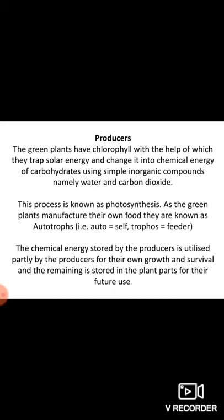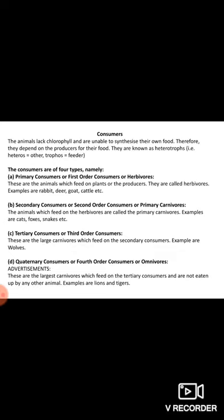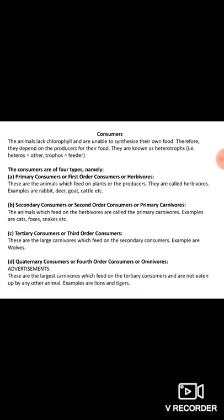Animals lack chlorophyll and are unable to synthesize their own food, so they depend on producers and are known as heterotrophs. 'Heteros' means others, 'trophos' means feeder — something that depends on something else. Consumers are categorized into four types: primary consumers, secondary consumers, tertiary consumers, and quaternary consumers. Primary consumers are also called first-order consumers or herbivores — please understand that herbivores are primary consumers.